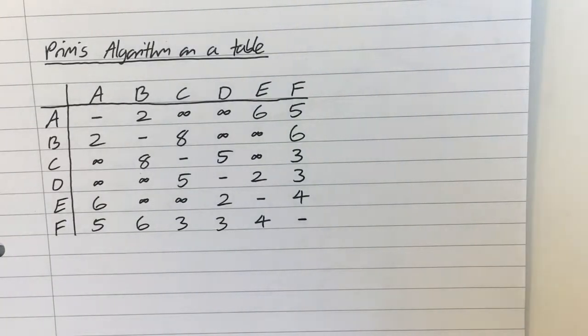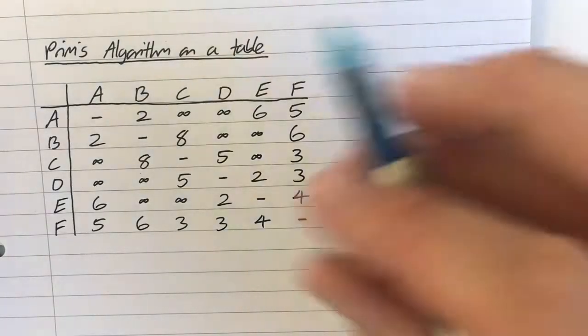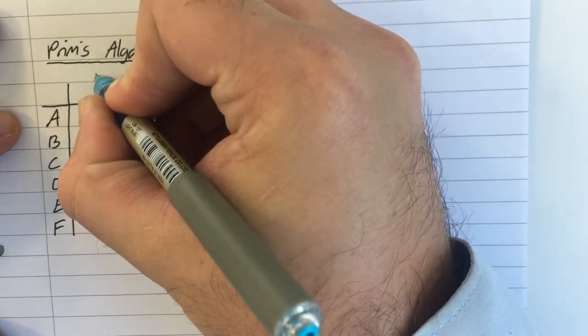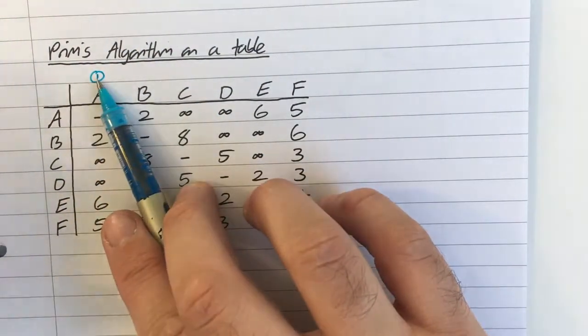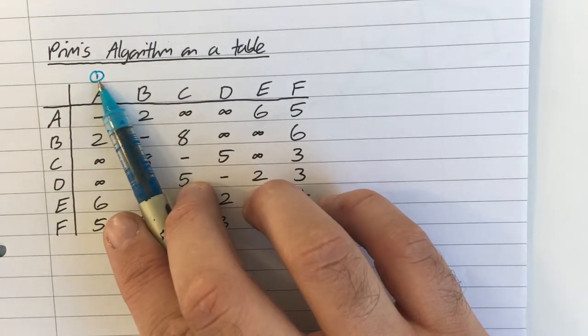So, exactly the same way as you did with the network form of Prim's algorithm, we choose, arbitrarily, a starting node. Where do we want to start? A. Okay, so what I'm going to do is I'm just going to write the number 1 above A, and what that's telling me is that A is part of my tree.